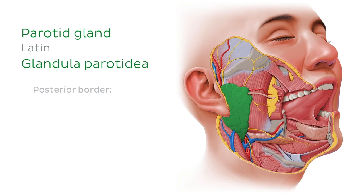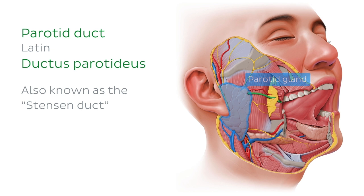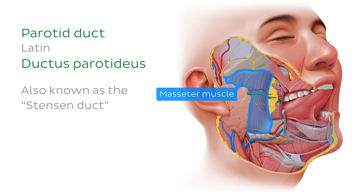The parotid duct, also known as the Stenson duct, transports saliva into the oral cavity. It arises from the anterior surface of the parotid gland and runs across the anterior surface of the masseter muscle before piercing the buccinator muscle. The duct opens into the oral cavity near the upper second molar tooth.